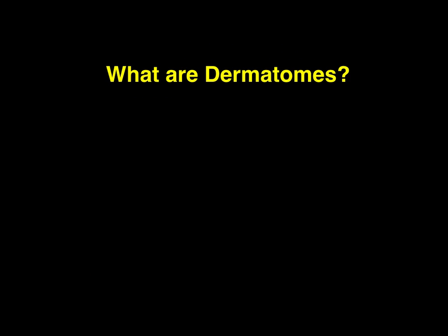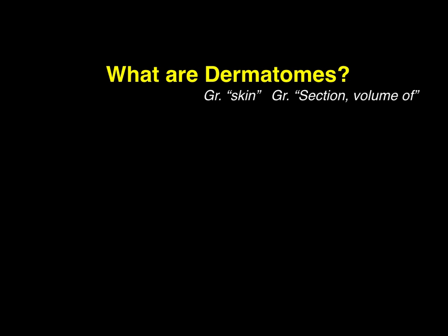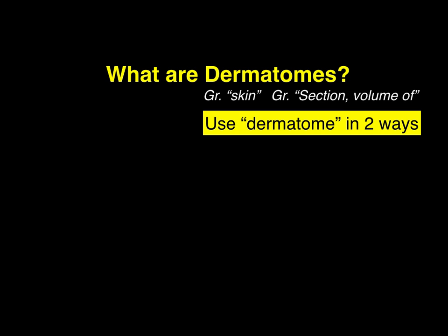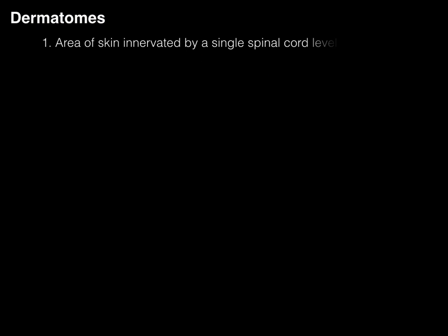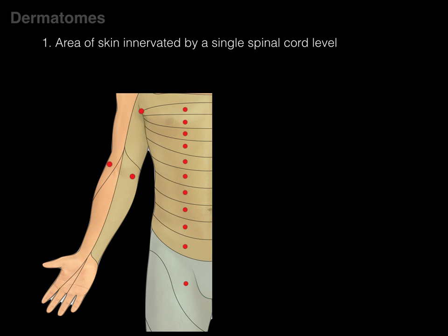So what are dermatomes? The prefix 'derm' is Greek for skin, and 'tomes' is Greek for section or volume of. So literally, dermatome means a section of skin. In health sciences, dermatome is used in two ways. First, a dermatome is an area of skin innervated by a single spinal cord level.